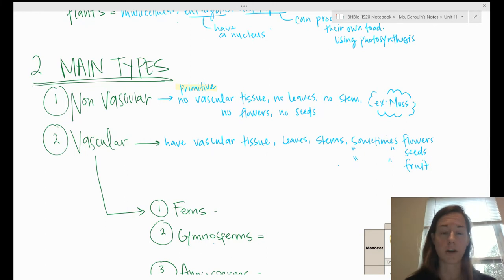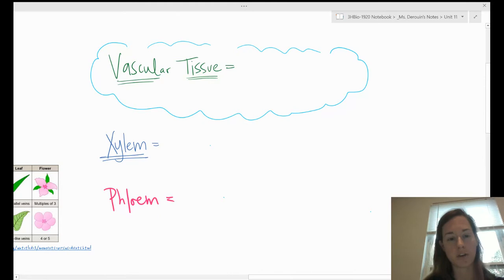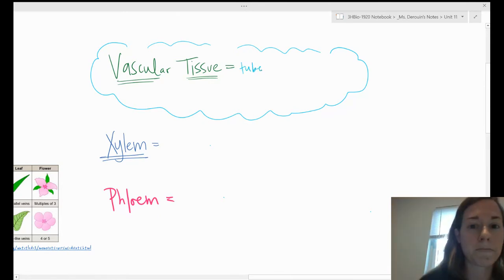Before we go any further, let's talk about vascular tissue. Vascular tissue are just tubes that transport materials around the plant.